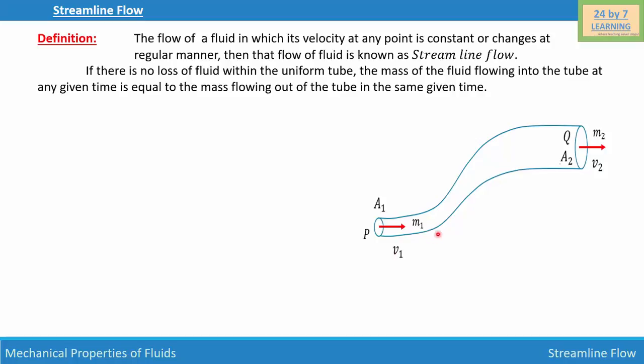In the same way, let this be point Q and let mass m₂ pass through this point Q whose cross sectional area is A₂ and let the velocity of the fluid leaving point Q be v₂.